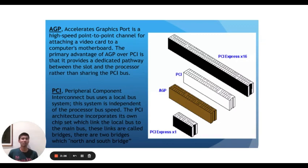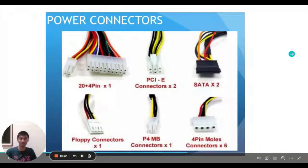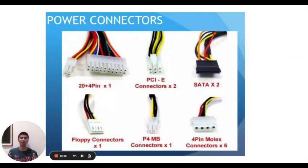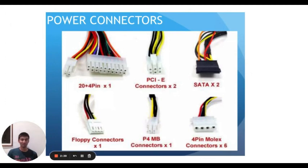There are two bridges: the north bridge and the south bridge. As you can see, there are different types of slots — the AGP can be in the middle, and PCI comes in different sizes. You can get a smaller version, PCI Express 1, or a larger version like PCI Express 16. Now, power connectors are devices through which electricity passes to supply the device. The ATX 24-pin connector is mainly used nowadays. There are also six different types of power connectors: 24-pin, 20+4 pin, PCI connector, SATA, floppy connector, P4MB connector and a 4-pin Molex connector.